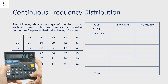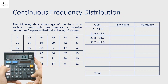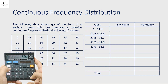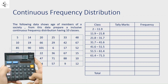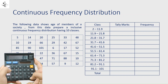Continuing to press equals, we get the successive classes: 21.8 to 31.7, 31.7 to 41.6, 41.6 to 51.5, 51.5 to 61.4, 61.4 to 71.3, 71.3 to 81.2, 81.2 to 91.1, and finally 91.1 to 101. We have now obtained all 10 classes.